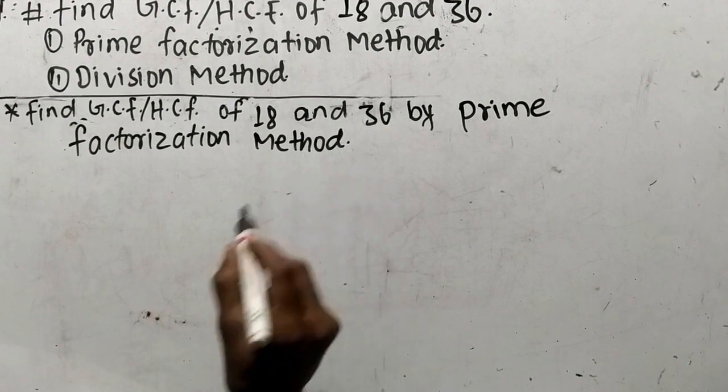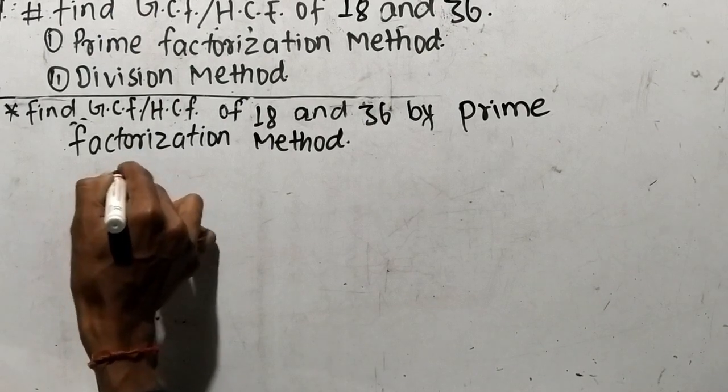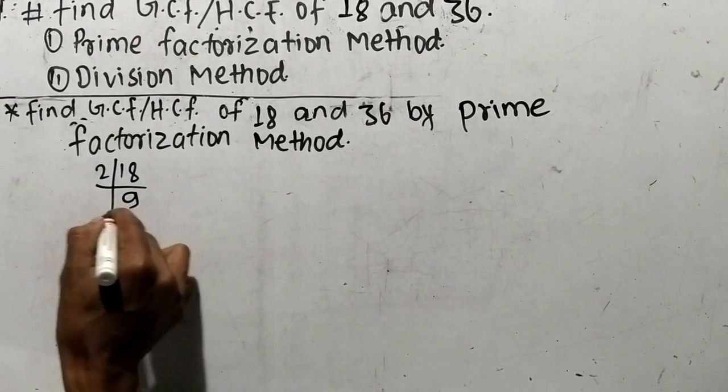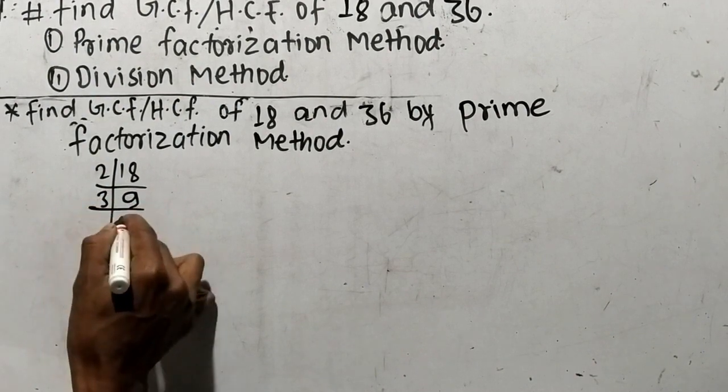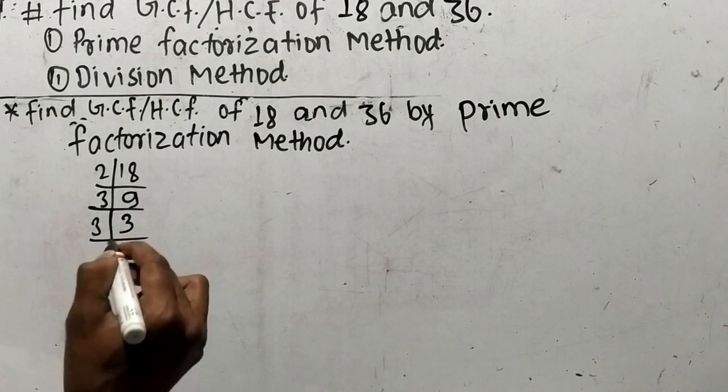So, our numbers are 18 and 36. Let's find out the prime factors of 18. It is 2 times 9 means 18, like 3 times 3 means 9 and 3 times 1 means 3.